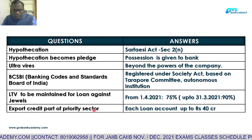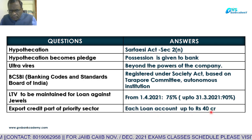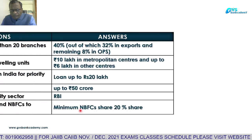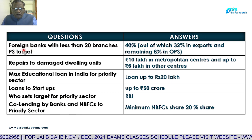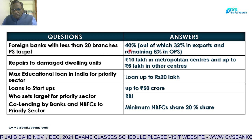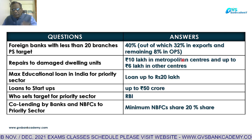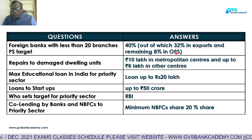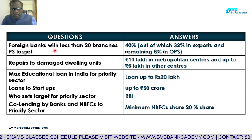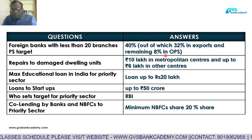Export credit is part of priority sector. Each loan account up to 40 crores, if banks are financing for export credit, comes under priority sector export credit. For foreign banks operating in India with less than 20 branches, the priority sector target is 40%, out of which 32% they can give in exports and remaining 8% in other priority sectors.